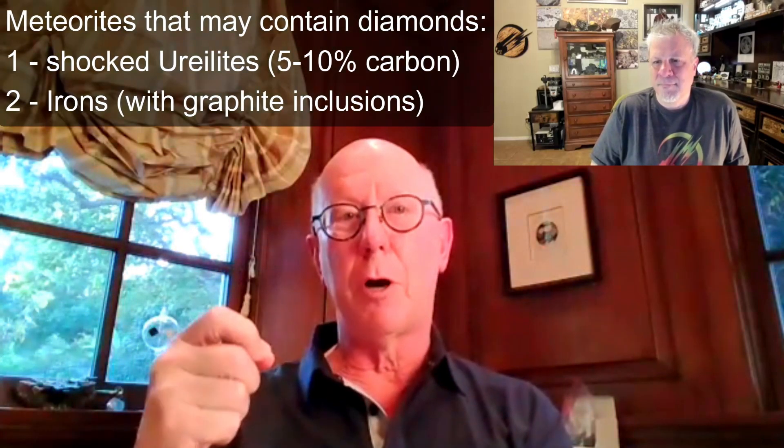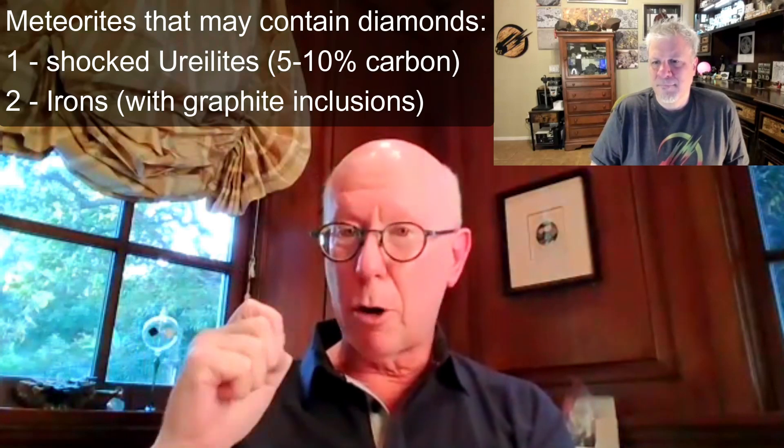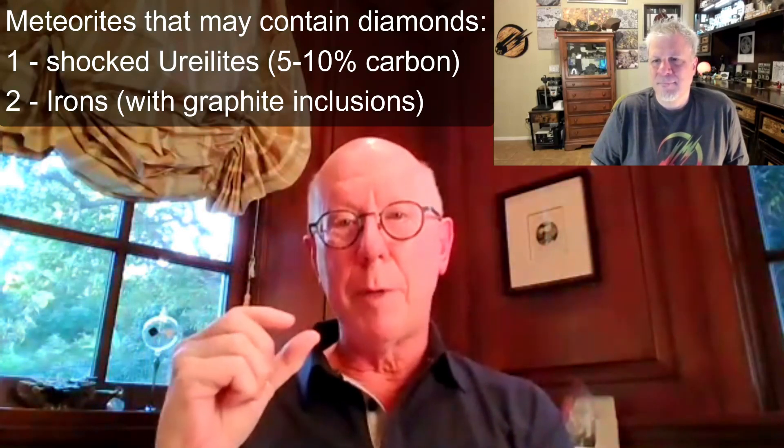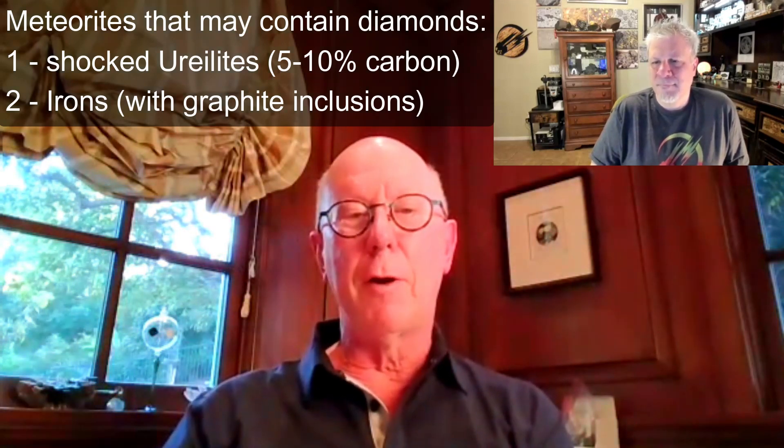That hardness is what's interesting. People who cut meteorites hate it when there are diamonds in them because they get very hard to cut. Some ureilites that aren't shocked cut fairly easily; some are really hard and take a long time. The other categories of meteorites with diamonds are: irons, especially those with graphite inclusions — which I'll talk about — and then carbonado diamonds, which are diamonds themselves. Let me screen share and talk about these.